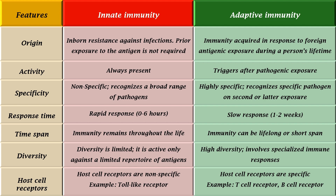Innate immunity shows rapid response, and the immunity remains throughout the life, whereas adaptive immunity shows slow response, and this immunity can persist lifelong or for a short span. There is limited diversity in innate immunity, but adaptive immunity shows high diversity.